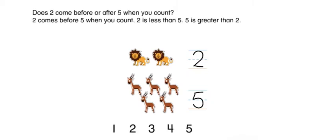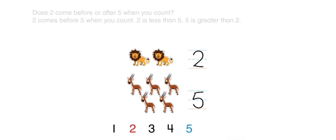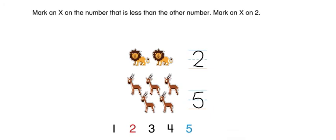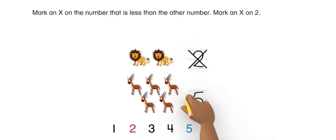Does two come before or after five when you count? Two comes before five when you count. Two is less than five. Five is greater than two. Mark an X on the number that is less than the other number — mark an X on two.